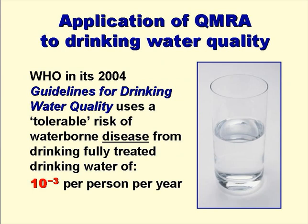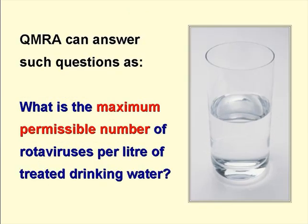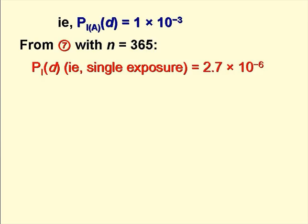So what's the use of QMRA? Well, we can apply it to drinking water, for example. The World Health Organization uses a tolerable risk of waterborne disease of 10 to the minus 3 per person per year. This means it's acceptable if one person in a thousand becomes ill each year from drinking fully treated drinking water. We can use QMRA to set rational drinking water quality requirements, or standards. If we take PIAD as 10 to the minus 3 per person per year, then from equation 7 with N equal to 365, as we drink drinking water every day, we can calculate PID as 2.7 times 10 to the minus 6 per person per exposure event.